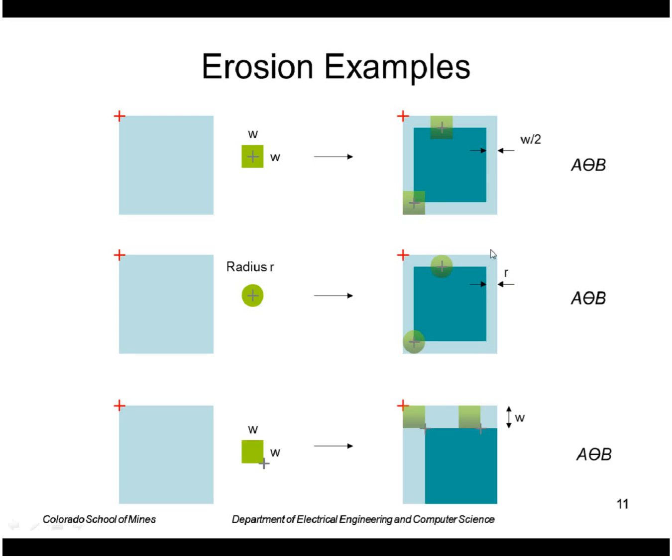If I take a structuring element that has the origin not in the center but say in the corner here, then this is the result of erosion of A by B. Remember that I have to output a one whenever the structuring element is completely inside A. That's true at this location, but if I go any further outside there it would not be true.